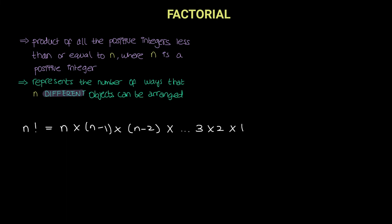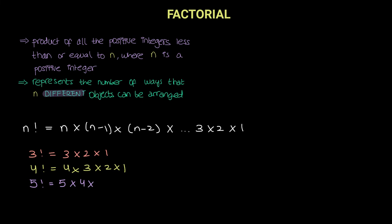So now we know from the previous example, if we needed to arrange three different objects, we can simply find it through three factorial ways, which is three into two into one. If we need to arrange four different objects, it will be done through four into three into two into one. And likewise, five factorial can be found by multiplying five all the way down to one.